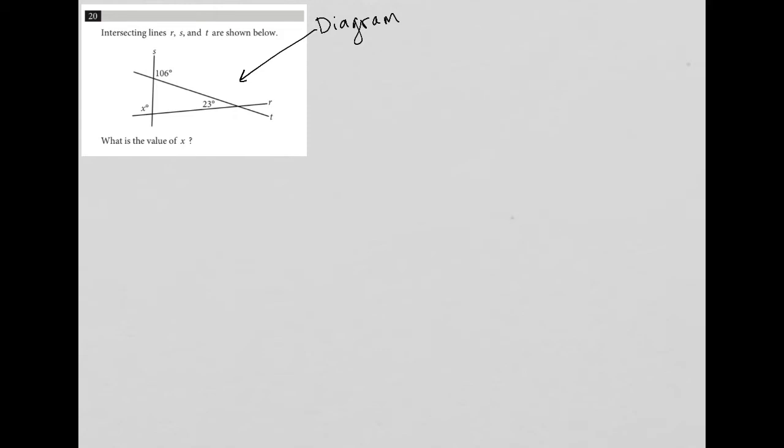So our first strategy is to look at what we're given and to fill in or label the diagram with anything that we know. And this is before reading anything.